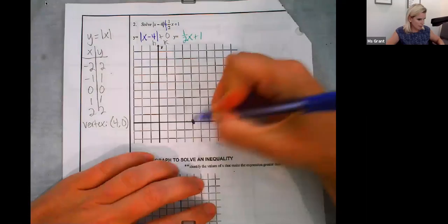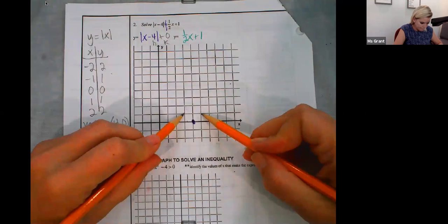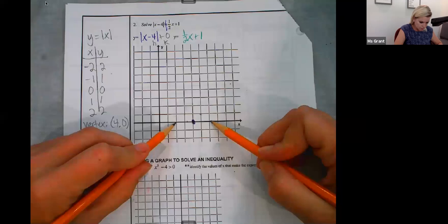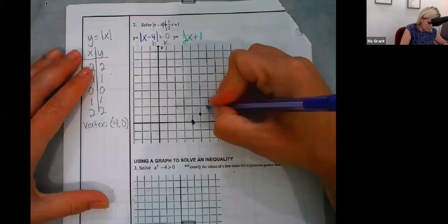4 comma 0 is my vertex. Now, remember, I just told you the parent function goes, because it's absolute value, over 1, up 1, over 2, up 2. The numbers are the same, guys. Over 3, up 3.